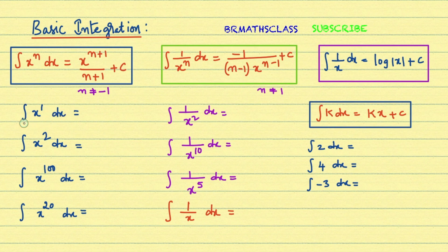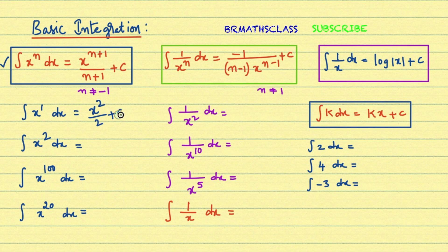Let's find the integral of x dx. x can be written as x power 1, so by using this first formula, the integral of x dx is x power 1 plus 1, that is 1 plus 1 equals 2, divided by 2 plus c. So integral of x dx is x squared by 2 plus c.